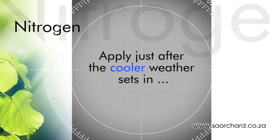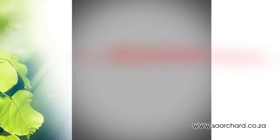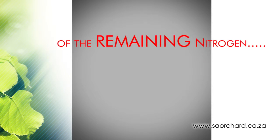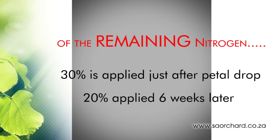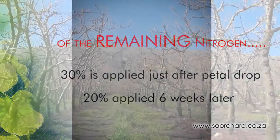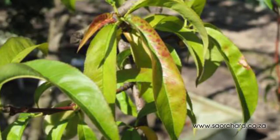This large nitrogen application should be done just after the cooler weather has set in, as new shoot growth before winter is not desirable. Of the remaining total nitrogen application, 30% is applied just after petal drop and 20% is applied six weeks later. The 20% application is optional and is done if the farmer feels that the 30% application after petal drop did not promote enough growth in the tree, or if the leaf color is not correct.